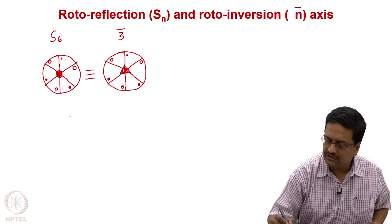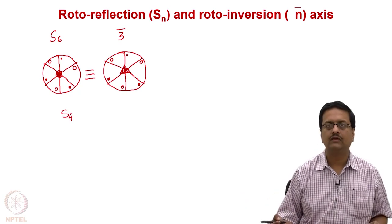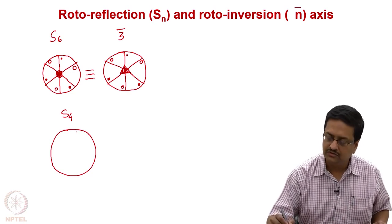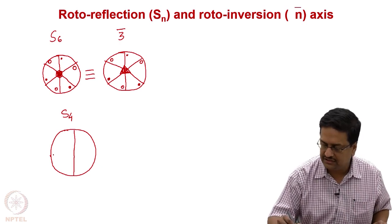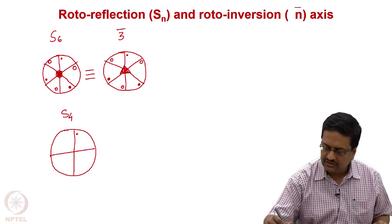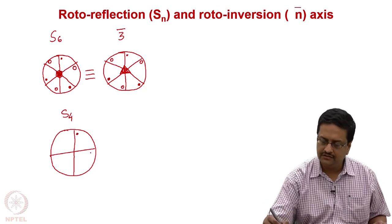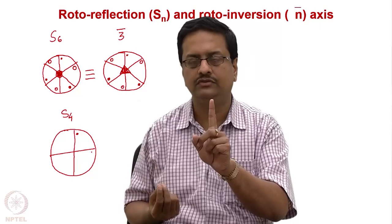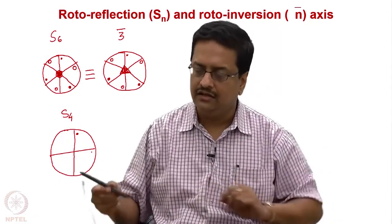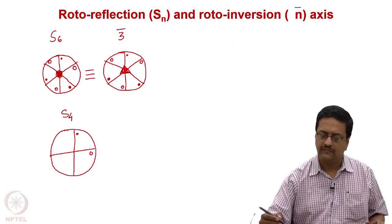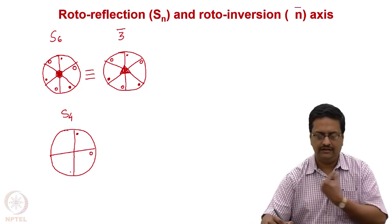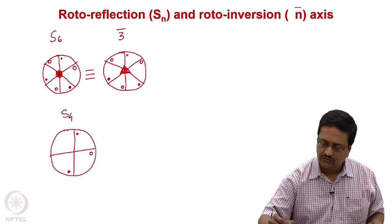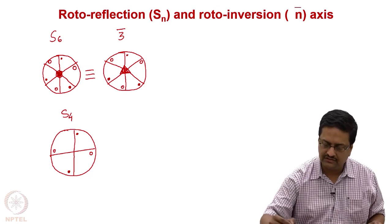Let us do the same exercise for S4. S4 is nothing but 90-degree rotation followed by reflection. When doing 90-degree rotation, I divide this circle into 4 parts. Starting with a point, I rotate it by 90 degrees and take a reflection, so it goes to the lower hemisphere and becomes an open circle. Then again, rotating by 90 degrees and taking a reflection brings it back above the plane as a closed circle. Another 90-degree rotation followed by reflection takes it there as an open circle.